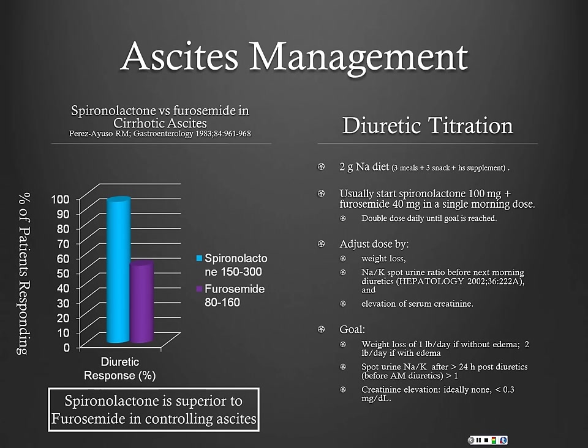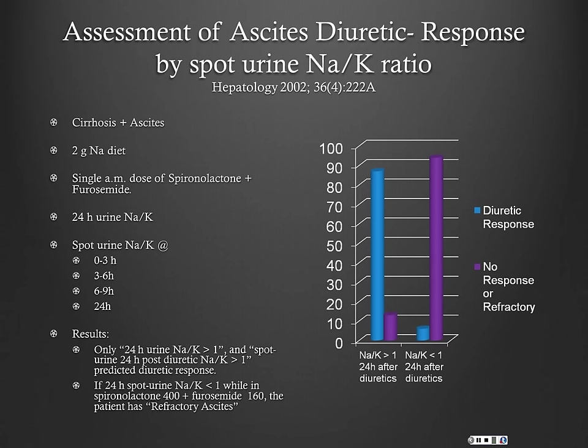You're going to be checking urine electrolytes and serum creatinine very closely. The goal is to lose about one pound a day if they don't have edema and about two pounds a day if they do. Make sure these patients are doing daily weights, just like a CHF patient — if they're losing three or four pounds a day, you need to cut back on their diuretics.